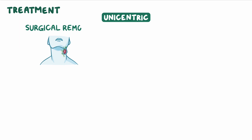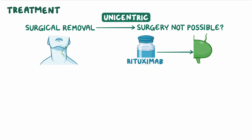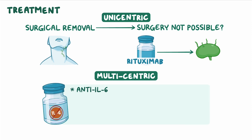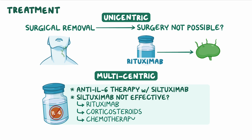First-line treatment of unicentric Castleman disease is surgical removal of the affected lymph node. If surgery is not possible, medications like rituximab may be given to attempt to shrink the lymph node. Treatment of multicentric Castleman disease involves anti-IL-6 therapy with ciltuximab, which is the only FDA-approved treatment for idiopathic multicentric Castleman disease. In individuals where ciltuximab is not effective, rituximab, corticosteroids, or chemotherapy regimens may be used.